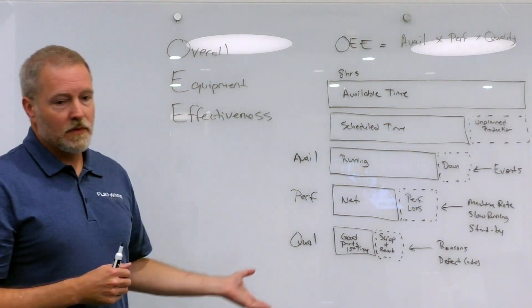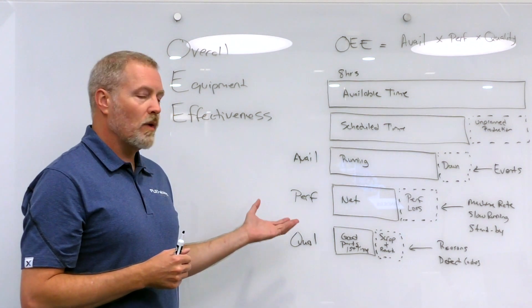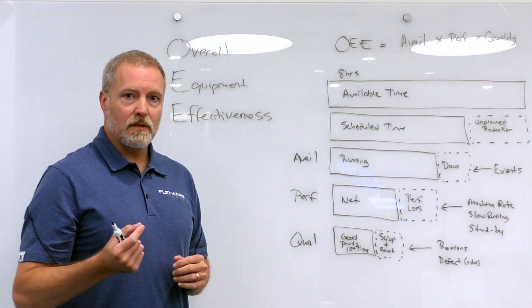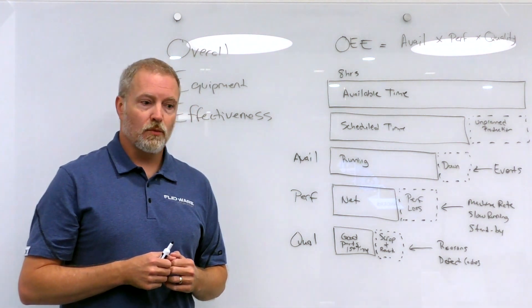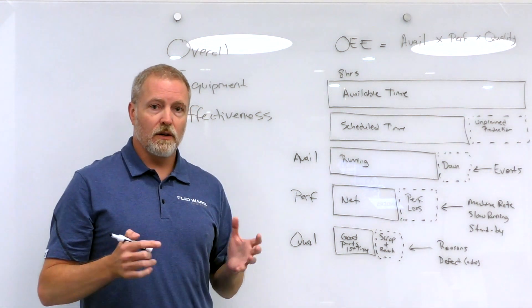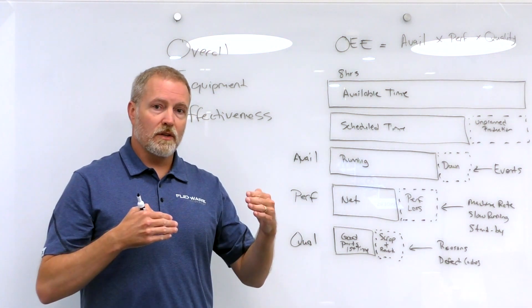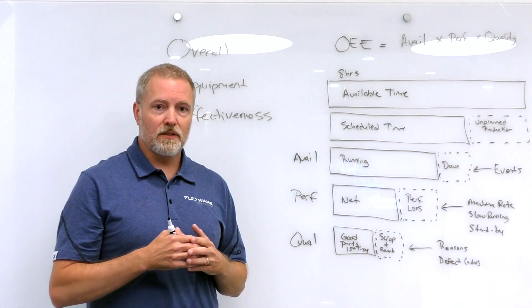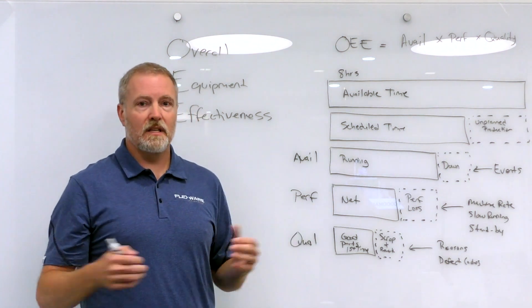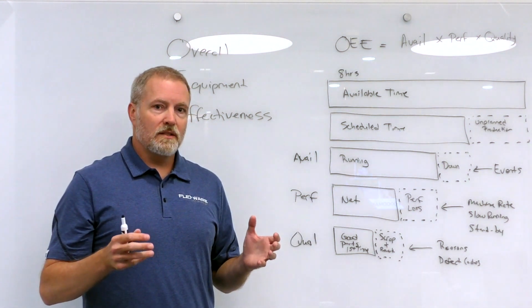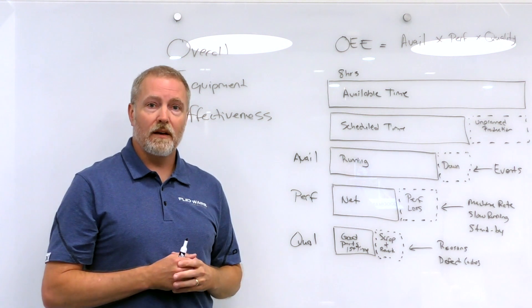OEE does span multiple industries, but what we have found is that the value of OEE and the way you assess it can be slightly different in each industry. For example, in the pharmaceutical or regulated industries where quality is a huge deal, where we focus a lot on regulations and adhering to those regulations, the changeover time between switching products in a manufacturing process is very rigorous. There's a lot of line clearances, cleaning activities that have to be tracked and maintained. So a typical OEE score would be lower in those industries by its very nature.